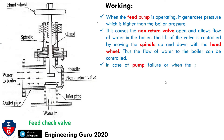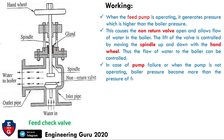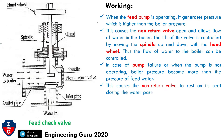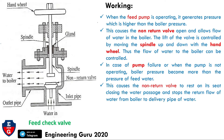In case of pump failure, or when the pump is not operating, the boiler pressure becomes greater than the feed water pressure. This causes the non-return valve to rest on its seat, closing the water passage and stopping the reverse flow of water from the boiler to the delivery pipe.